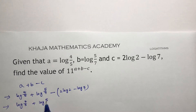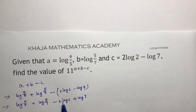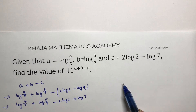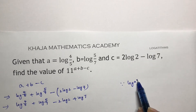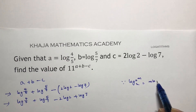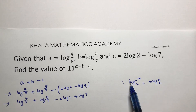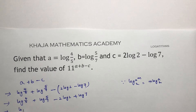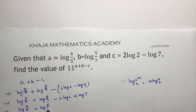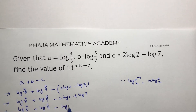So we have log(4/5) + log(5/7) - 2log2 + log7. This is in the form of the logarithm of a power. The logarithm power rule states: log(a^m) to the base x equals m·log(a). So 2log2 becomes log(2²), giving us log(4/5) + log(5/7) - log(4).